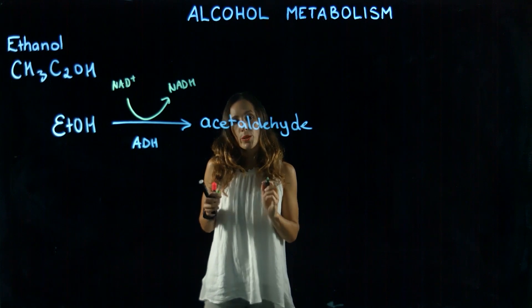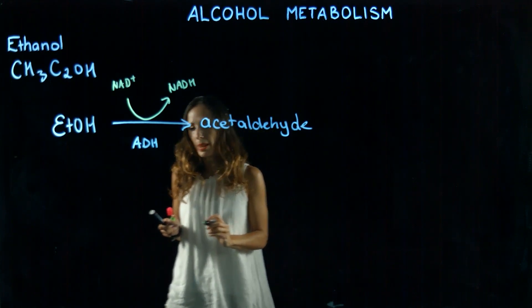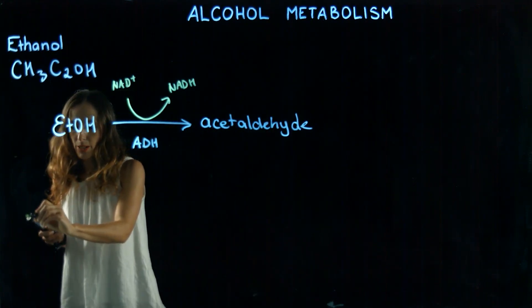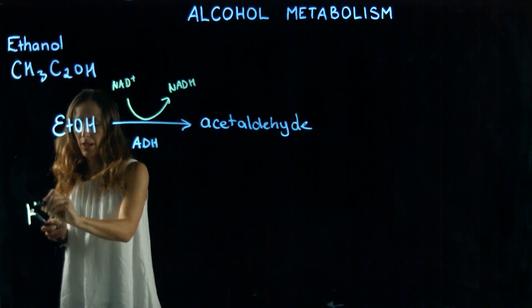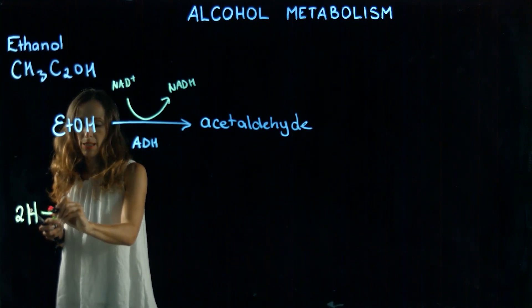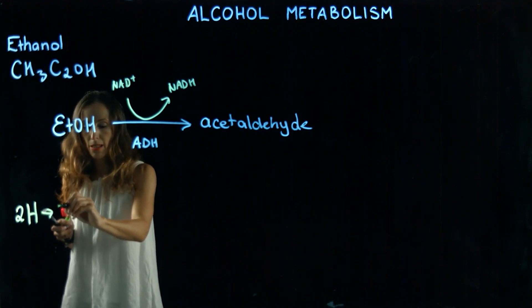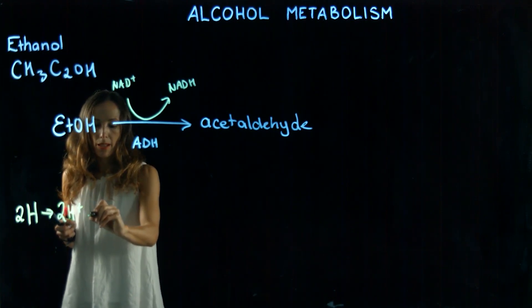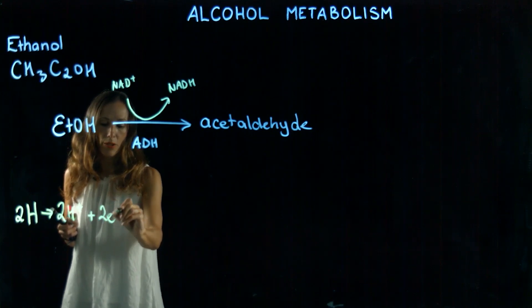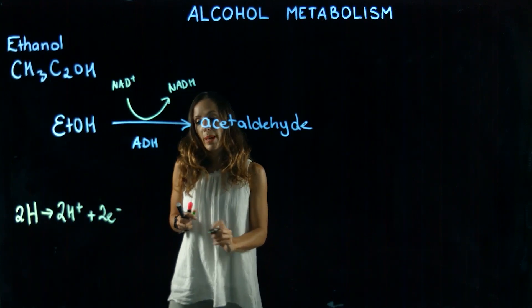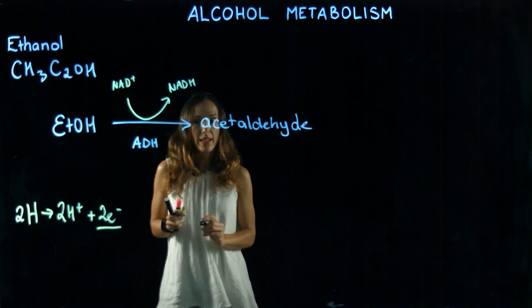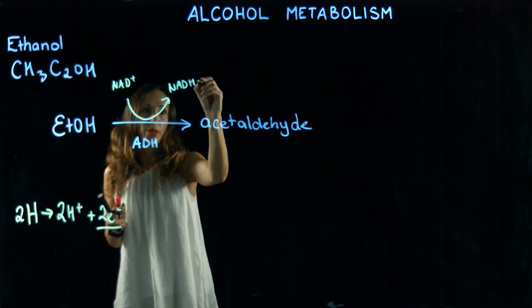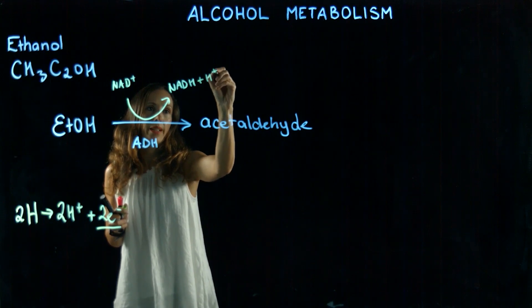Remember that when we're transferring a pair of electrons, we're actually including a hydrogen. We're thinking of having two hydrogens, which gives us two protons and a pair of electrons. When we talk about a pair of electrons being attached to our cofactor, we also have two protons, so you'll often see the second one written like this as well.